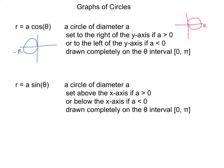In order to draw one cycle of the circle completely, you only need to go between 0 and pi for your theta values.